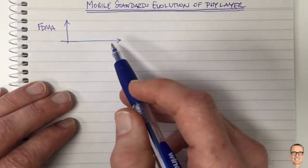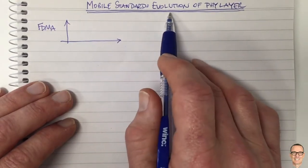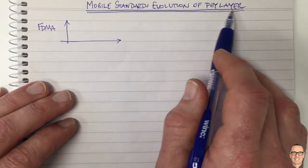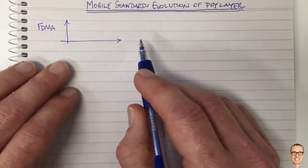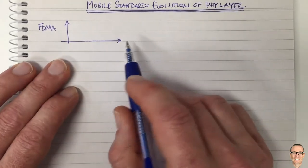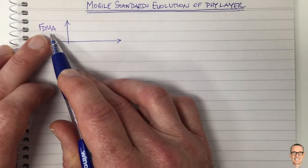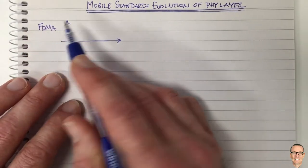Let's look at a high-level view of the mobile standards evolution of the physical layer. The physical layer is the signaling layer, and we'll start with frequency division multiple access (FDMA).